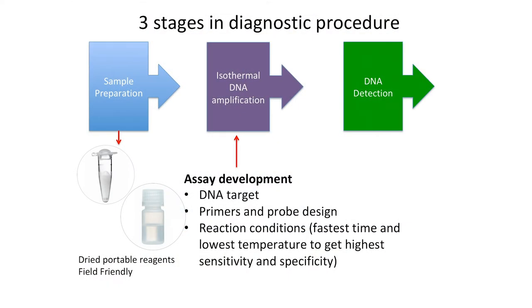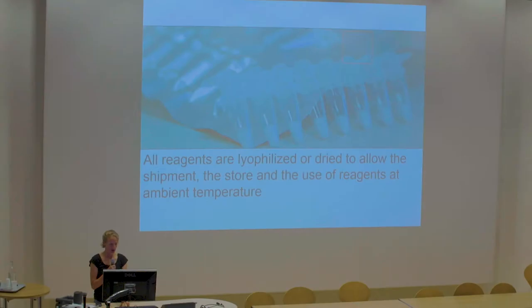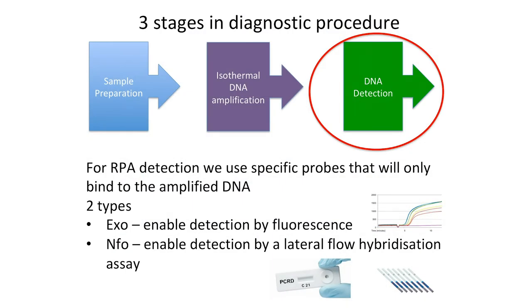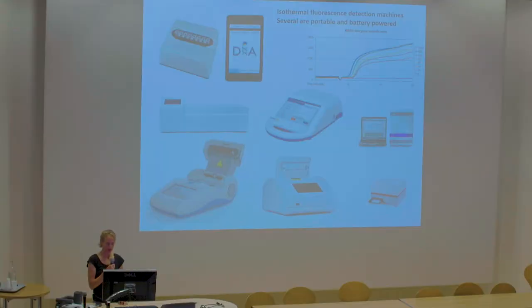For assay development, you think about which target to go for, design your primers and probes, then test reaction conditions to see how fast and how low a temperature you can get the reaction to run. The portable reagents come in strips as dry pellets, with primers and probes incorporated into the pellet so there are minimal steps for adding buffers and DNA targets. For DNA detection, there are two systems: the EXO fluorescent-based detection and the NFO lateral flow DNA detection system. Multiple small portable devices can do that fluorescence detection — some weigh just two kilograms and can be taken in a carry-on bag to the field.